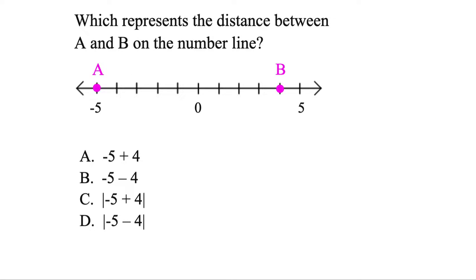And one last one. Which represents the distance between A and B on this number line? You got this one. You know it. Distance, it's got to be positive. We'll count left to right, and that gets us 9. But which of these is the same thing as that? Well, the first one, negative 5 plus 4. That's like being down 5 points in a game. Then our team scores 4. So now we're just down 1.